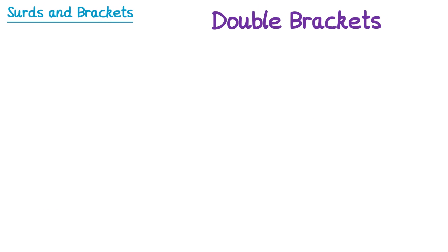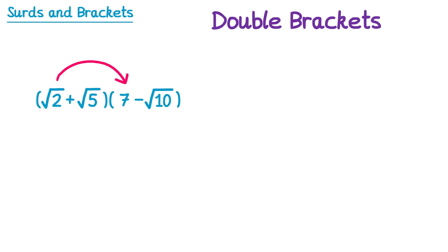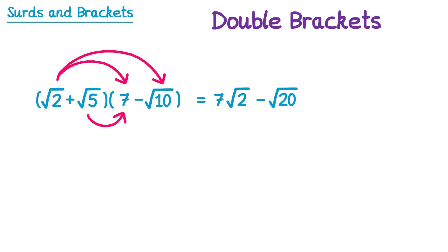Let's have a look at an even trickier example of double brackets. We start with square root 2 times 7, that's 7 root 2. Then square root 2 times negative root 10 — multiply root 2 and root 10 to get root 20 — so this is negative root 20. Then square root 5 times 7, that's 7 root 5. And finally square root 5 times negative square root 10, which is negative square root 50.